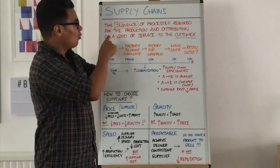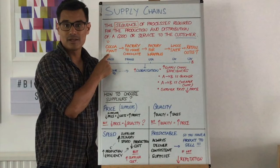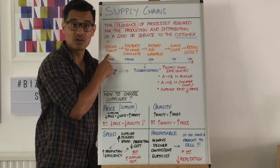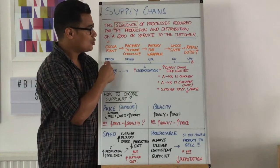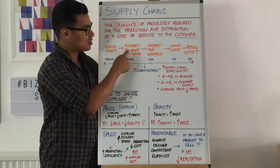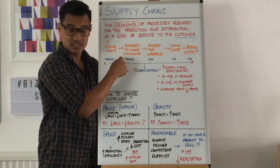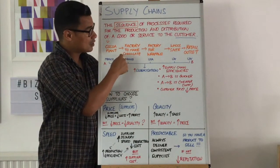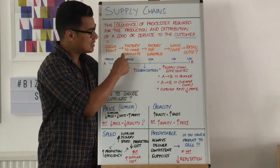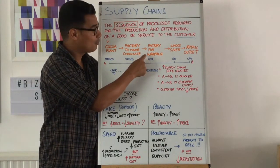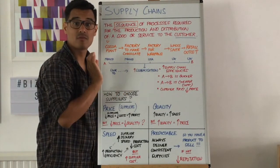An example of the sequence needed in a supply chain: to make chocolate, you need to have a farm with a cocoa plant — that could be in Mexico, for example. Then you need to take all the cocoa to the factory to make chocolate, which could also be in Mexico. After you've made the chocolate, you need to put it into wrappers, but maybe it's distributed to the USA, where it is wrapped at the factory.